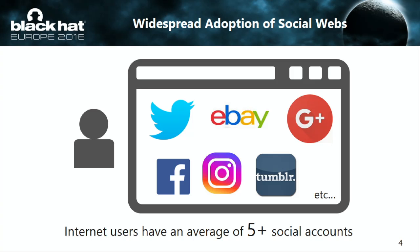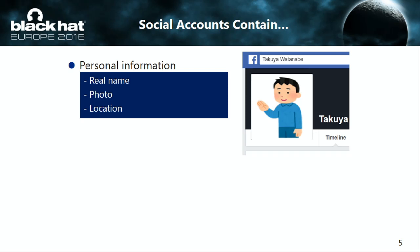The social web has become ubiquitous in our daily lives. It includes not only popular SNS, but also other forms of services with social features such as shopping, gaming, and dating sites. Marketing companies report that internet users have five or more social accounts on average. In these services, accounts can contain privacy-sensitive information — for example, SNS profile pages often include real name, face photo, and location data. Social accounts are linked with valuable personal information of users.